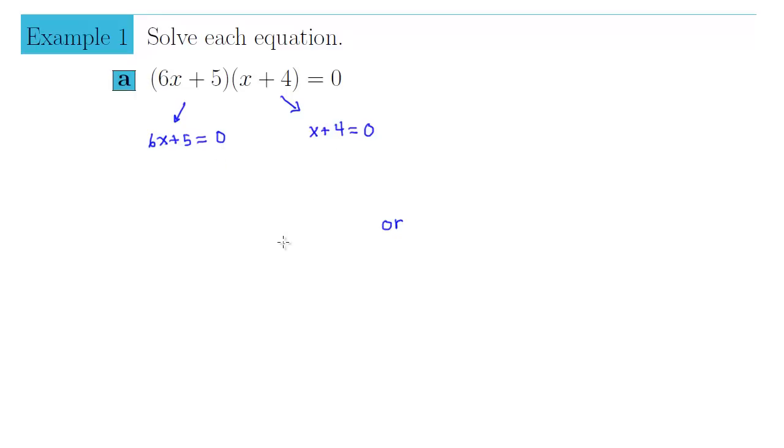Let's solve each of these linear equations. In order for 6x plus 5 to equal zero, that means that we have to subtract 5 from both sides. So we get 6x is negative 5, and dividing both sides by 6, this tells us that x would have to be negative 5 sixths.